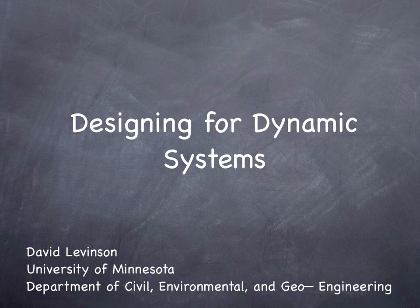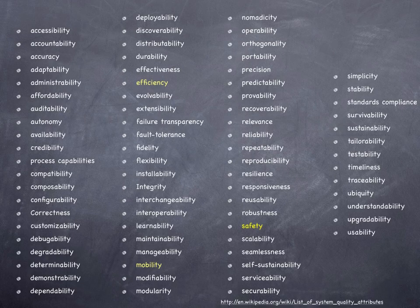The term 'ilides' has been used to describe various system properties that might be important. The word 'ilides' refers to the suffix of many system properties or attributes. A Wikipedia page has a long list of system quality attributes that might be considered in design.